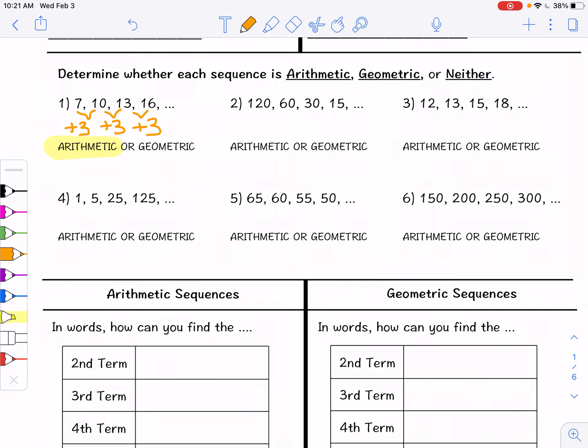120, 60, 30, 15. We're dividing by 2 or multiplying by 1 half every single time. Because this is a multiplication pattern and we are in fact multiplying by the same thing over and over we have a common ratio. And so this one is geometric.